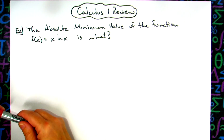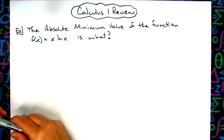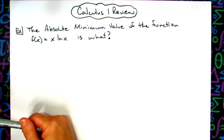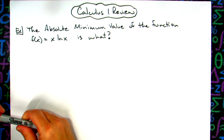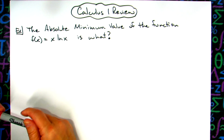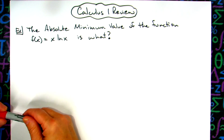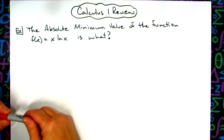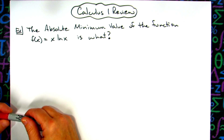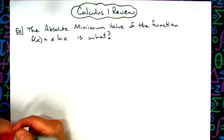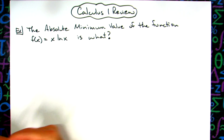In this video we're going to take a look at a review question that would be for a Calc 1 final exam. The absolute minimum value of the function f(x) = x · ln(x) is what?